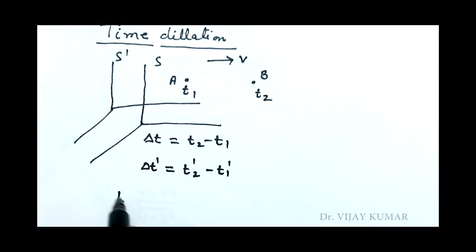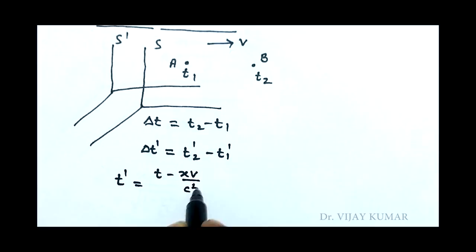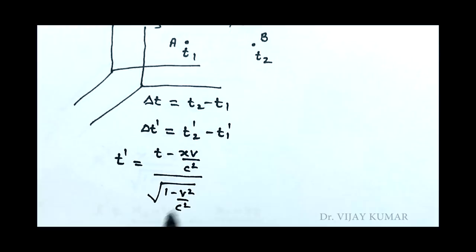According to Lorentz transformation equation, t dash equal to t minus xv upon c square upon under root 1 minus v square upon c square.